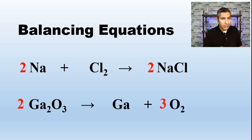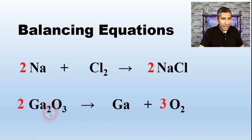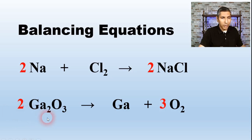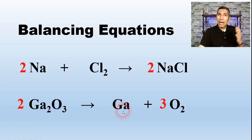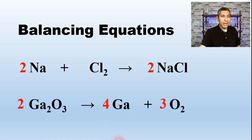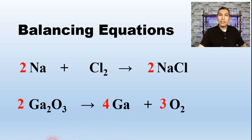Now that the oxygens are balanced, let's look at the gallium atoms. On the left side I have 4 gallium atoms — I had 2, but the coefficient of 2 out front multiplies that by 2. On the right side I have only 1, so I put a coefficient of 4 to balance the galliums. Now I have 4 gallium atoms on both sides and 6 oxygens on both sides. This is a balanced equation, with coefficients 2, 4, and 3.